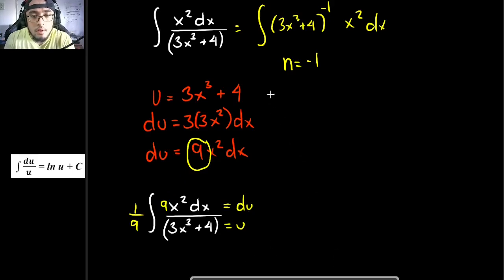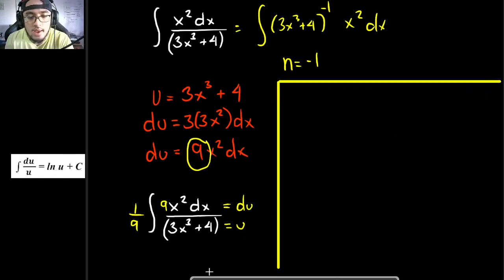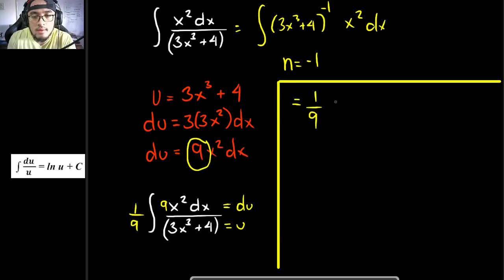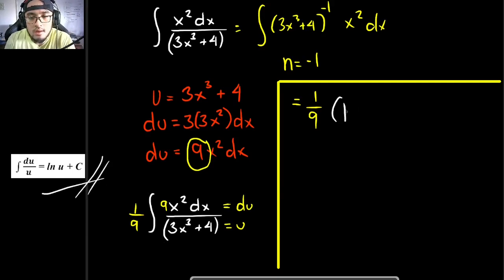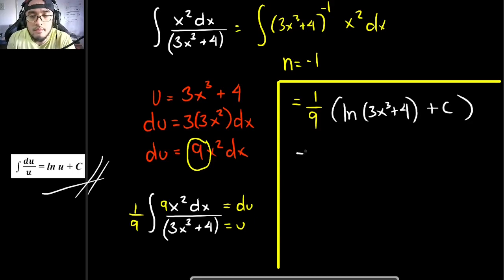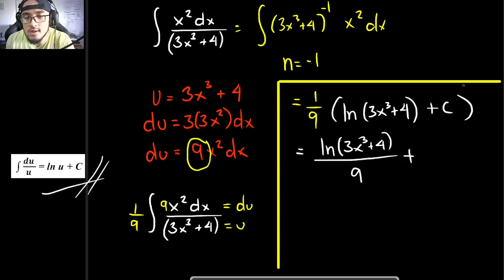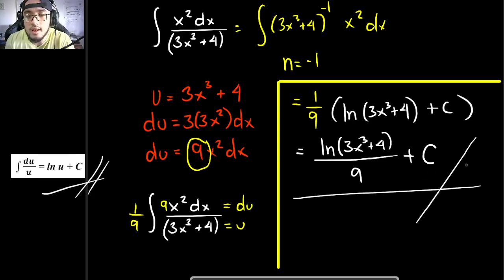Solving the problem using the logarithm formula, the answer is 1 over 9 times the natural logarithm of u, where u equals 3x cubed plus 4, plus c. Simplifying, this is equal to the natural logarithm of 3x cubed plus 4, divided by 9, plus c over 9. Since a constant divided by a constant is still a constant, c over 9 is just c. This is the final answer for this problem.